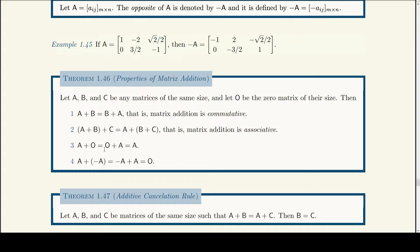The zero matrix of the same size is the additive identity: if I add a matrix to the zero matrix I get the matrix back. The term 'additive identity' comes from group theory. Also, if I add a matrix to its opposite (negative), I get the zero matrix. The opposite is called the additive inverse — be careful, this is additive inverse, not multiplicative inverse like 1/2.